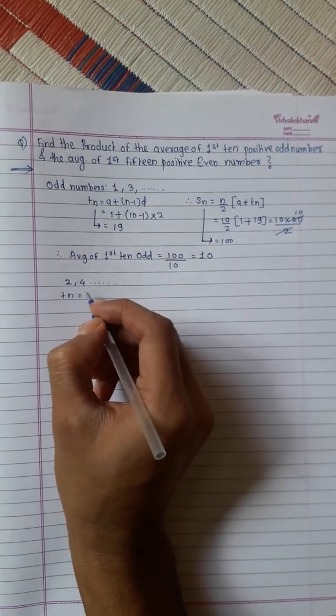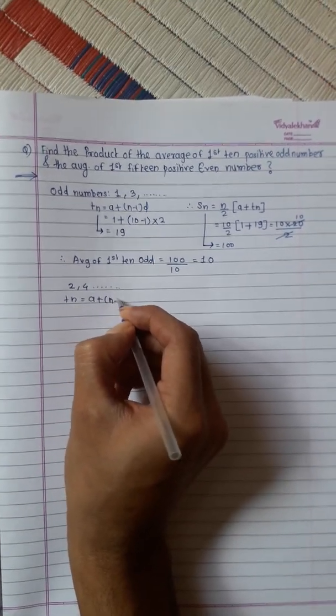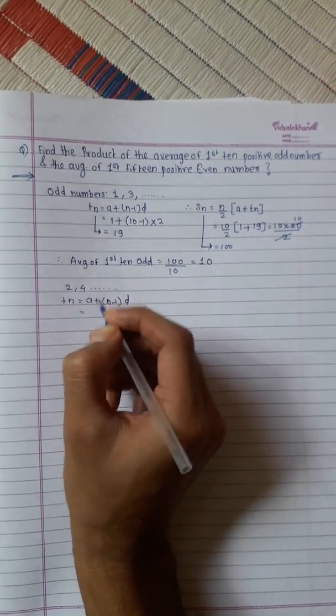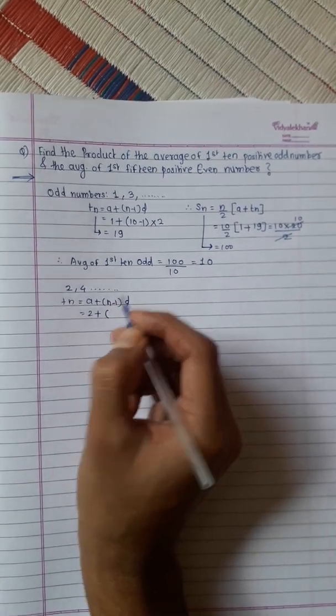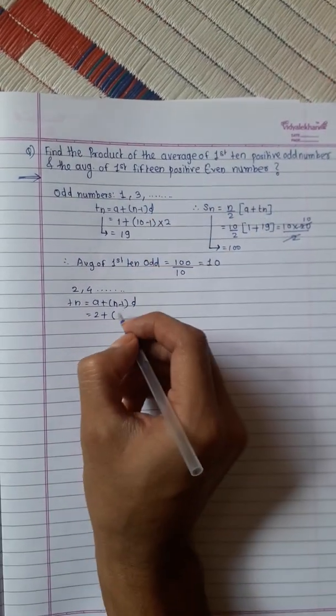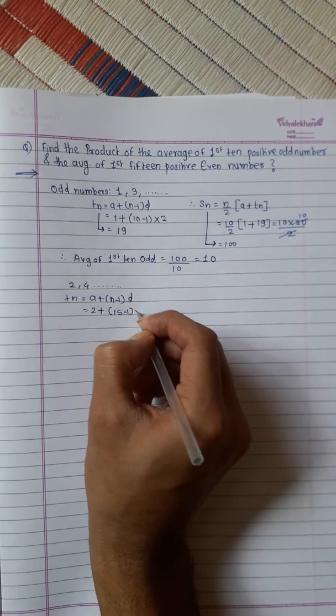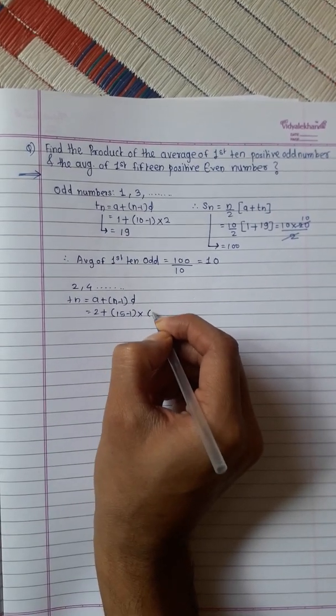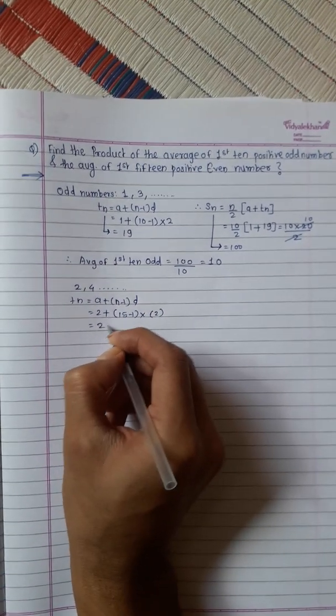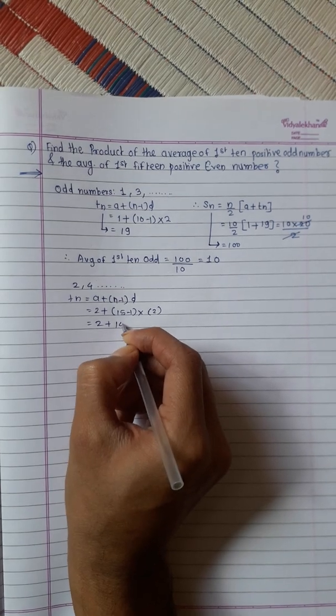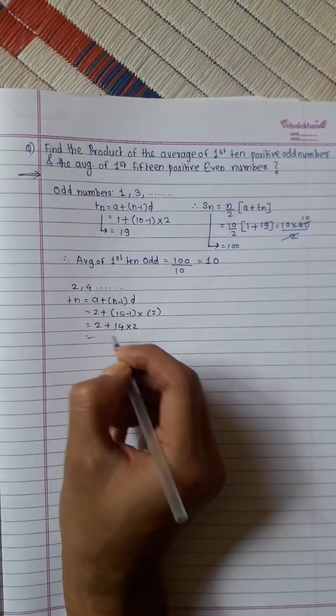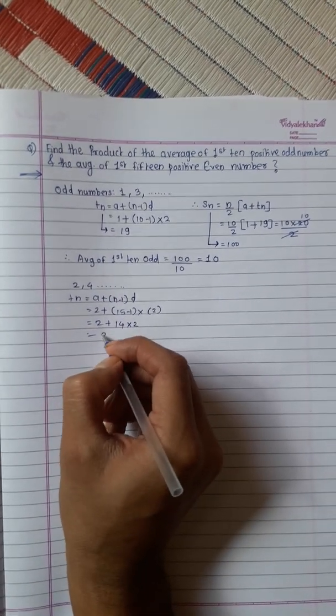The t_n equals a plus (n minus 1) into d. First number is 2 plus 15 numbers. This is 15 minus 1 into, this difference is 2. This is 2 plus 14 into 2. 14 into 2 is 28 plus 2, 30.